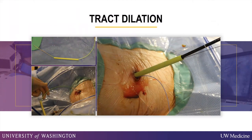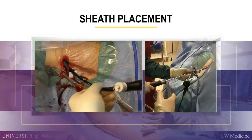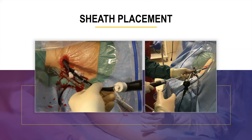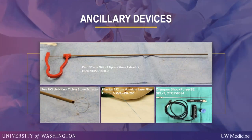Then we get access to the structure of interest, whether the biliary tree, gallbladder, stomach, or kidney. Access can be obtained in the same setting, or the patient may have had a tube previously placed. We then dilate the track using dilation balloons — for example the BARD X-Force balloon, which is up to 30 French, for access for flexible or rigid endoscopes. We then insert the scope into the organ of interest and get direct visualization of what we're looking at, whether that's gallstones, choledocholithiasis, kidney stones, or a foreign body in the stomach.